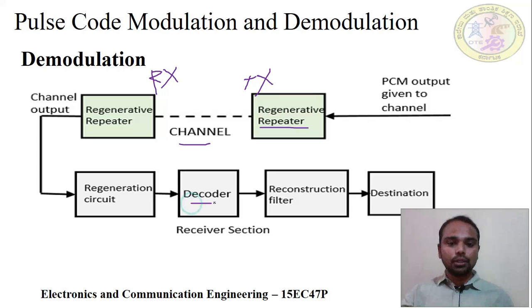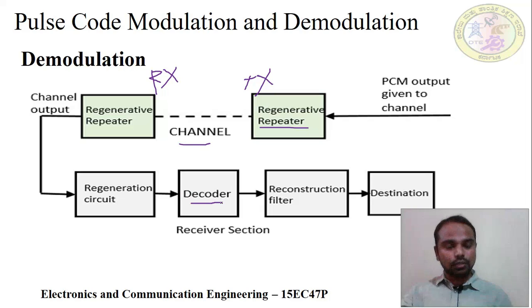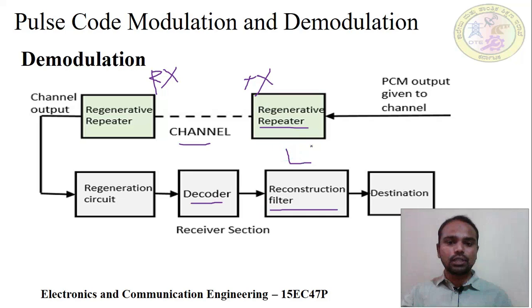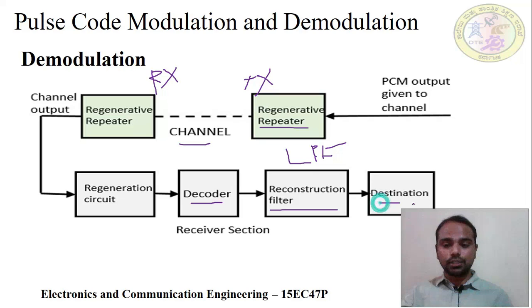At the receiver side we perform decoding using a decoder. The decoder performs the reverse operation of the encoder — the encoded binary values are decoded back to quantized values and then to sampled values. This circuit is called the demodulator circuit. Next is the reconstruction filter, which is also a low pass filter. It is used to recover the original signal. The low pass filter passes only the desired frequency and gives it to the destination.